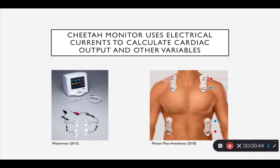Fortunately, the Cheetah Monitor is such a non-invasive device, and it works by attaching electrodes above and below the heart, as seen in this picture. By using the concept of bioimpedance — how different body tissues impede electrical current — it can measure fluid changes in the thoracic cavity to derive cardiac output and other important parameters.